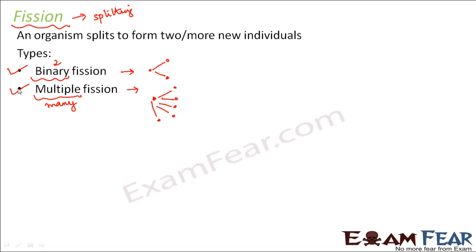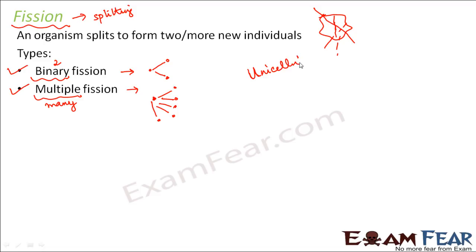The splitting can happen along various planes. For example, if this is the organism, it can split along this axis, or along this axis, into two halves — there are many different ways. Fission is mostly seen in unicellular organisms, since asexual reproduction is more common in unicellular organisms generally.